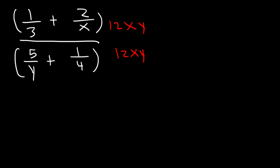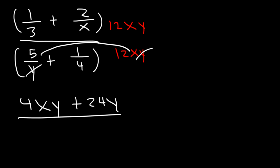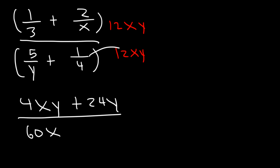So what is 1/3 of 12xy? That's going to be 4xy. Then 2 over x times 12xy — the x variables will cancel — so it's just 2 times 12y, which is 24y. 5 over y times 12xy — the y variables will cancel — so it's 5 times 12x, which is 60x. And then 1/4 of 12xy is 3xy.